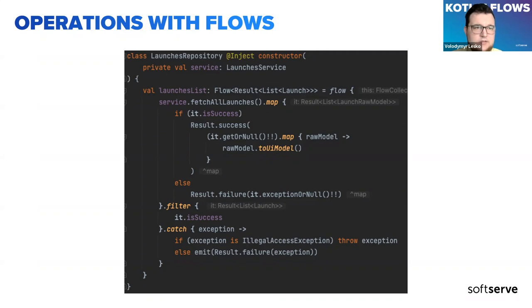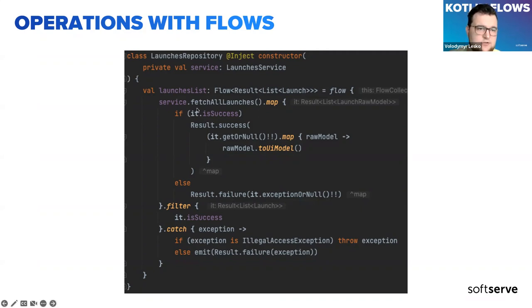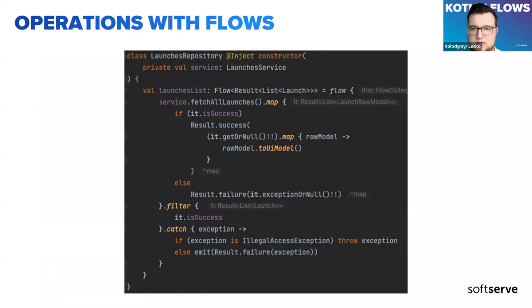We can also combine these functions one by one. As you can see in the screenshot, first we map all the values from the flow which returns after calling fetchAllLaunches, then we can filter them by some predicate, and for example catch any errors if we get them.